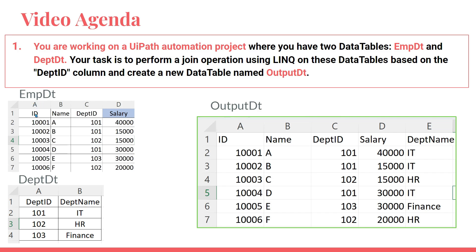The employee_dt has got ID, name, department ID, and salary. The department_dt has got the IDs and the department name. For example, employee A has department ID 101, which means he is from the IT department. Employee C with 102 means he is from HR, and 103 means he is from Finance. So there are two different tables and your task is to perform a join operation using LINQ on these data tables based on the department ID column.